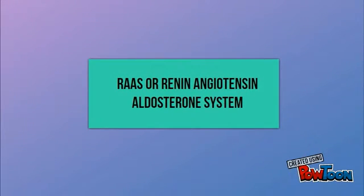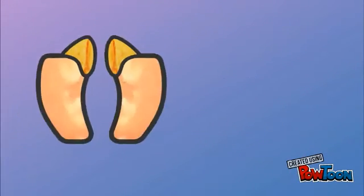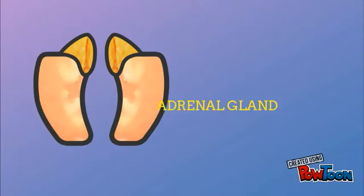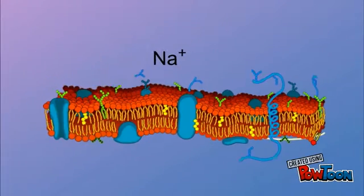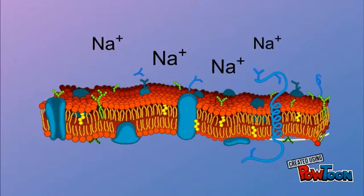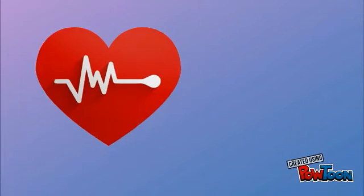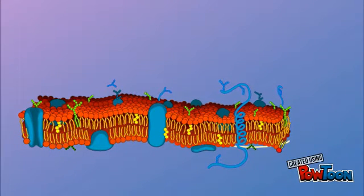RAAS is a hormone system that is involved in the regulation of plasma sodium concentration and arterial blood pressure. It is a signaling pathway to regulate the blood pressure of a person when the plasma sodium concentration is lower than normal or the renal blood flow is reduced.